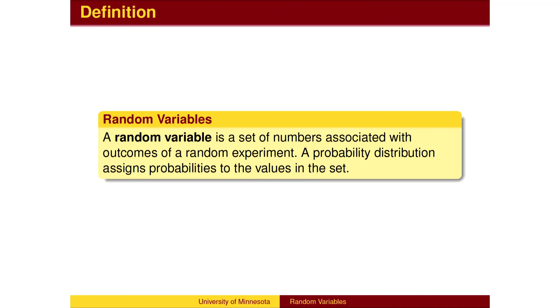To recap, a random variable is a set of numbers associated with outcomes of a random experiment. A probability distribution assigns probabilities to the values in the set.